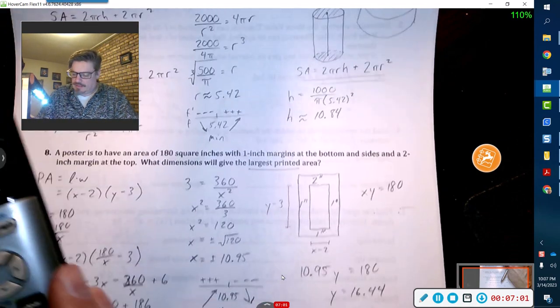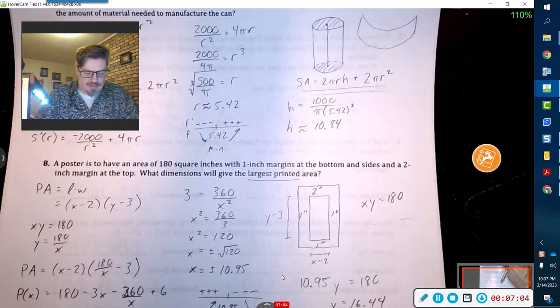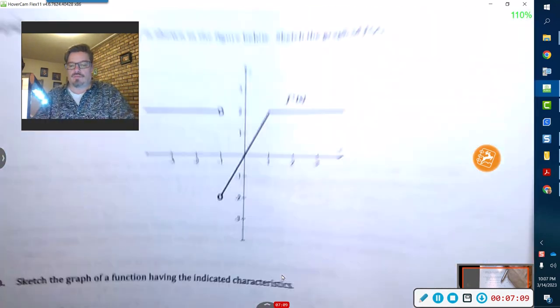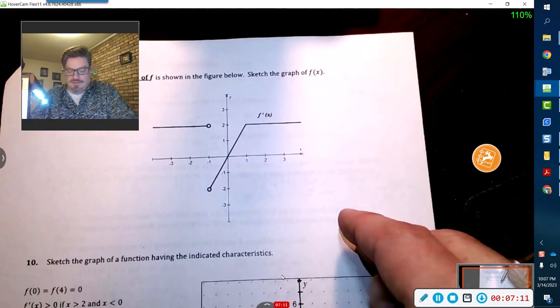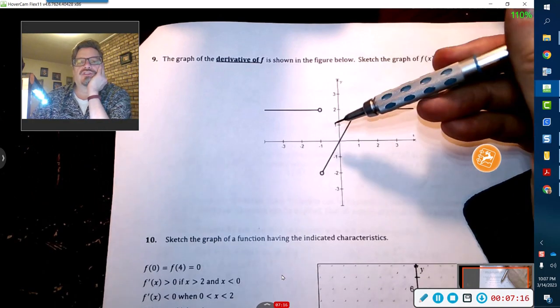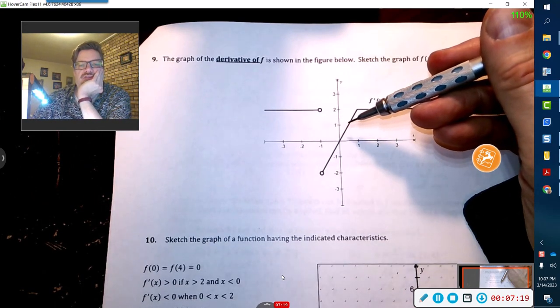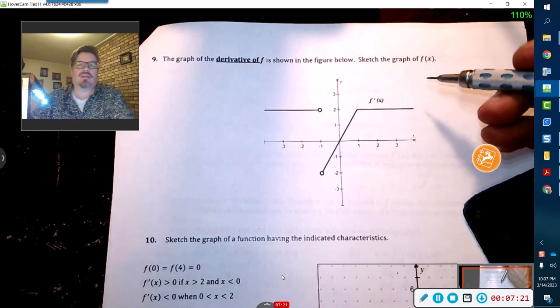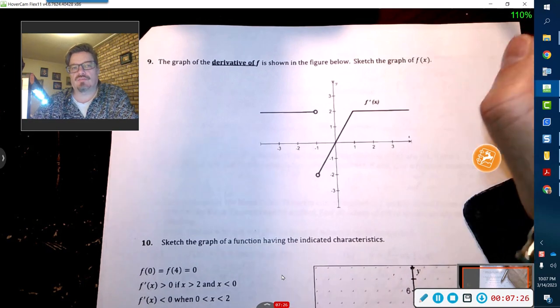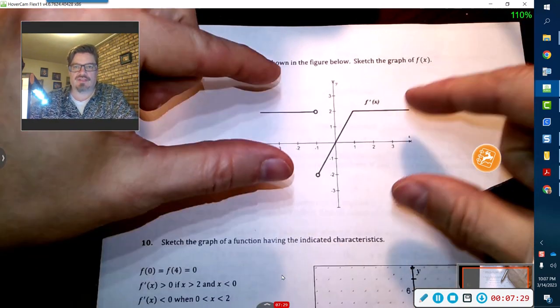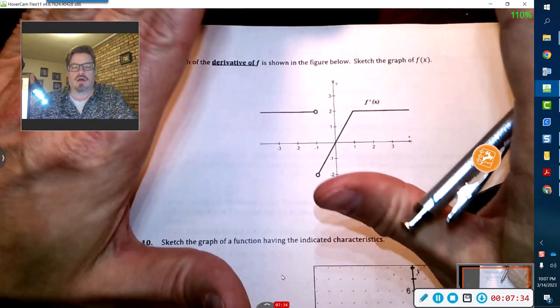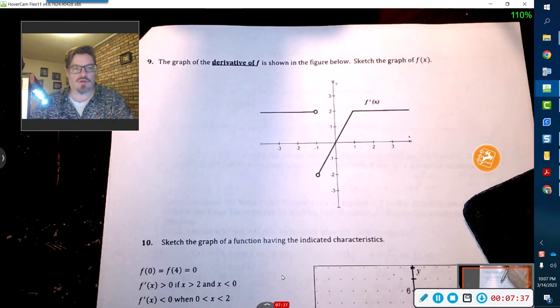Alright, and I do believe that's it. So moving forward, let's do number 9, and then 10 will be its own video. The graph of the derivative is shown here. What we're doing is sketching f(x). This is a sketch, so this thing could be anywhere as long as it's kind of up or down. The slope should be generally pretty close.